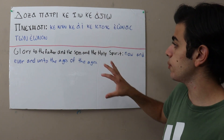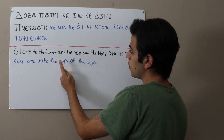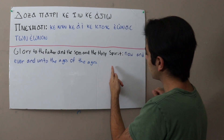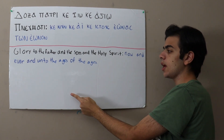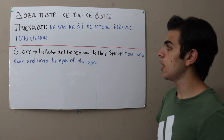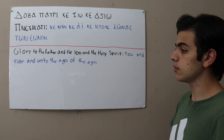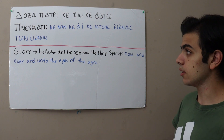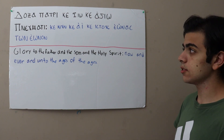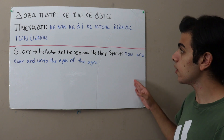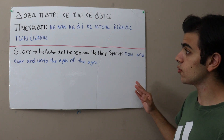And the meaning for this paragraph here is: glory to the Father and the Son and the Holy Spirit, now and ever and unto the ages of the ages. This paragraph is found in many places — in the liturgy, in vespers, just all over the place. So it's very common and something very good to know and to be able to recognize. Thank you guys.